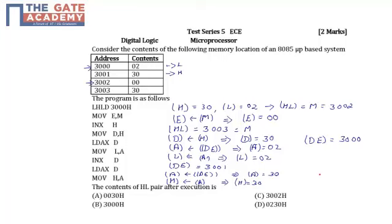At the end, we have contents of H and L. H is 30 and L is 02, so HL equals 3002H. Our answer is option C, 3002H. Thank you.